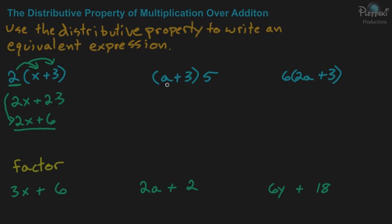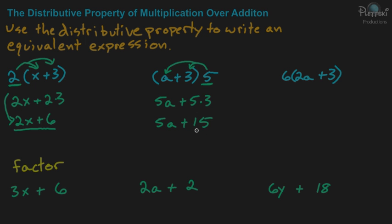This next one is basically the same except the number on the outside of the parentheses is actually behind the parentheses instead of in front. But you're going to do it the same way — distribute the 5 into each term inside the parentheses. So a plus 3 times 5 is going to give you 5a plus 5 times 3, or you can rewrite it as 5a plus 15, because 3 times 5 is 15. And that's an equivalent expression to what we started out with.